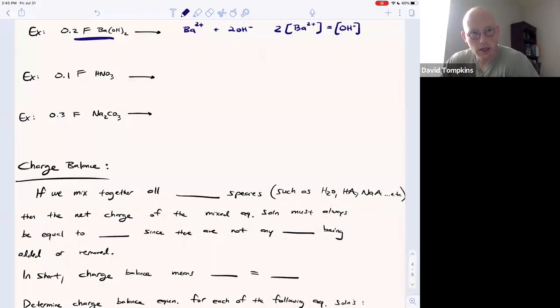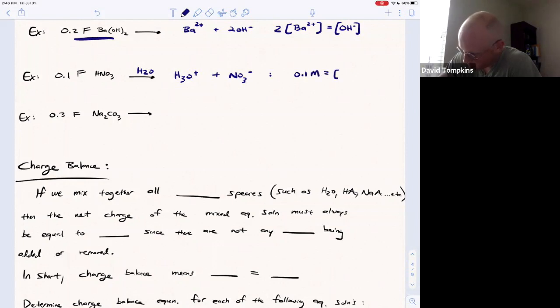So here, another example with nitric acid. What you would see is this dissociates into hydronium when it reacts with water and the nitrate ion. And 0.1 molar would be equal to the nitrate ion. There's one nitrate for every one nitric acid, and that would be equal to the hydronium concentration. It's a one to one here.